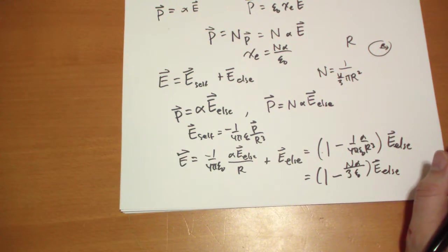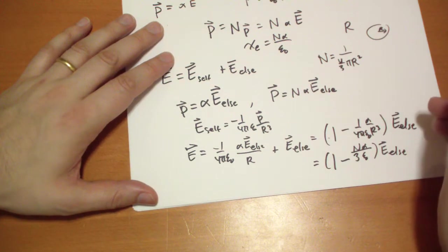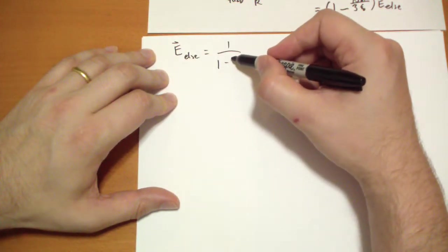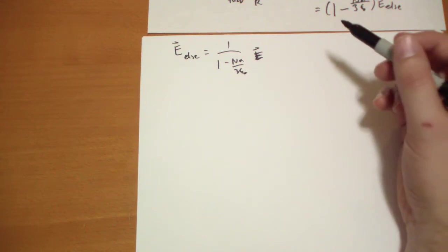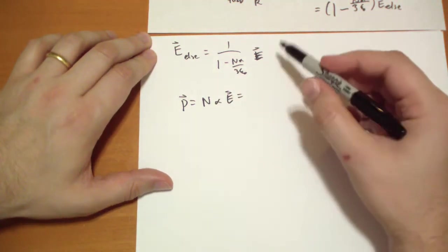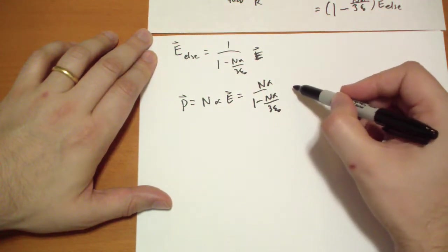So the polarization, E-else is equal to 1 over that, times the electric field. And so the polarization, which is just N alpha times the electric field, is actually equal to N alpha divided by 1 minus N alpha over 3 epsilon-naught times the electric field.